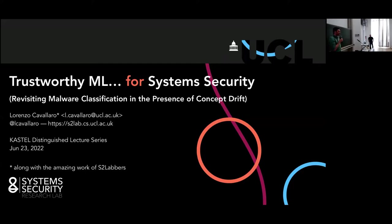We have Lorenzo Cavallaro here, who finished his PhD in 2008 from the University of Milan and spent a couple of years as a postdoc at UC Santa Barbara and Freie Universität in Amsterdam before getting a lecturer position in London. He progressed through the different steps at Royal Holloway until he received a full professorship in 2018, then moved to King's College London, and last year to University College London.